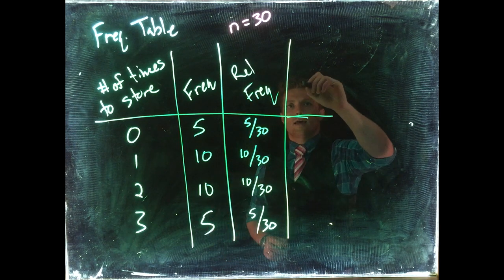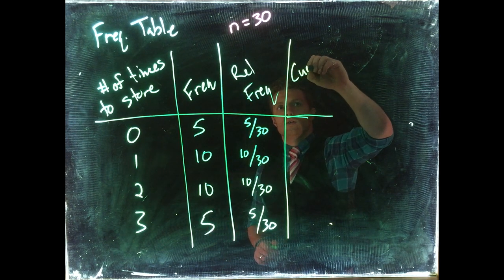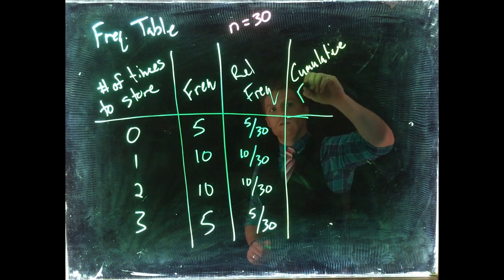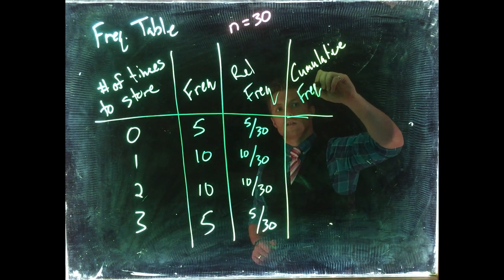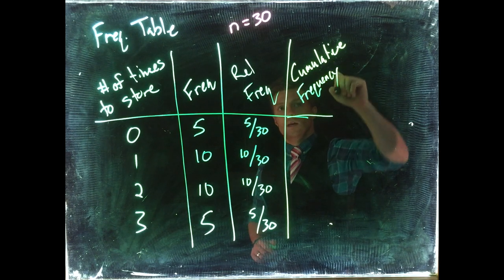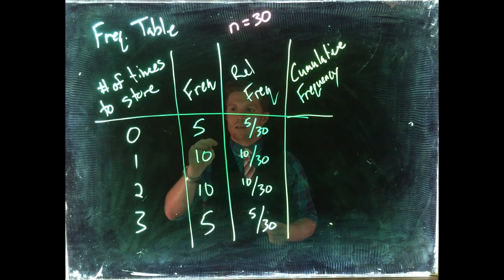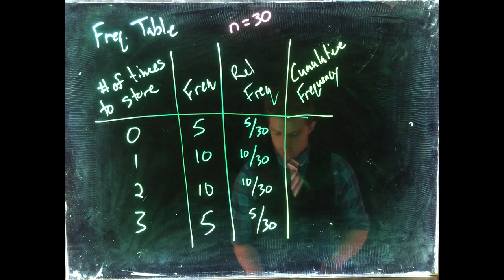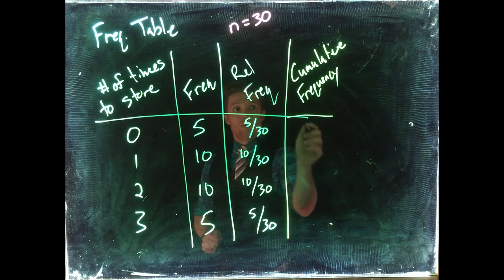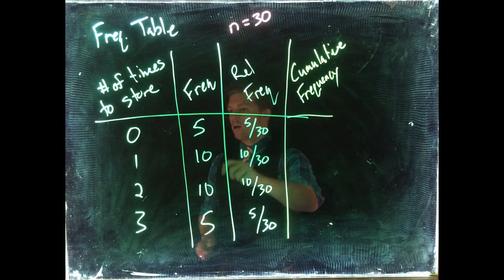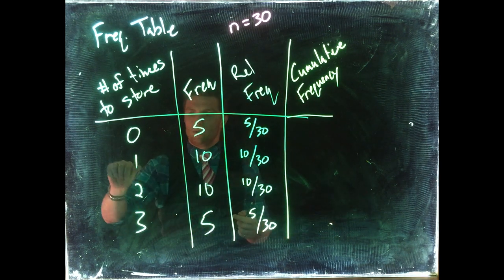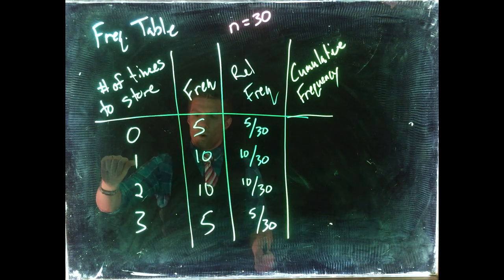The next one is cumulative frequency. Cumulative frequency is just going to be the count of the event plus everything before it. The cumulative frequency is just going to say, okay, what is the problem, or how many times did people, or how many people went to the store one time or less?